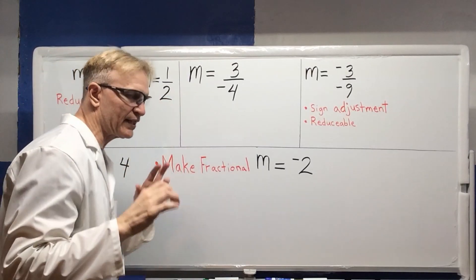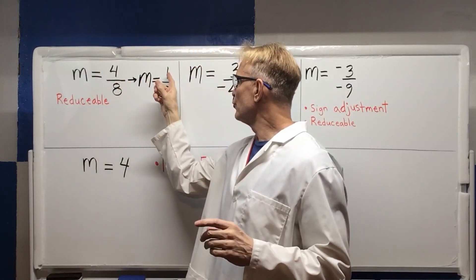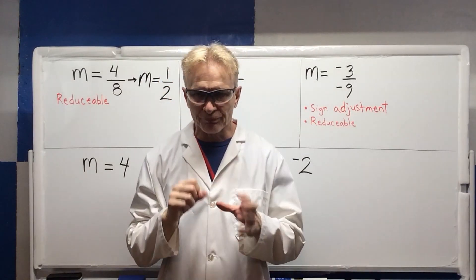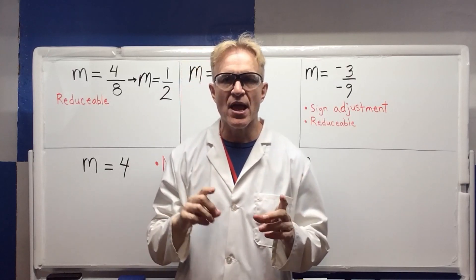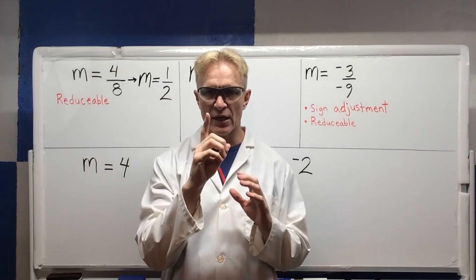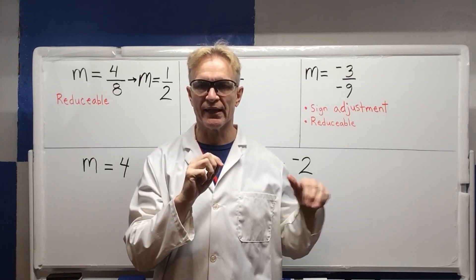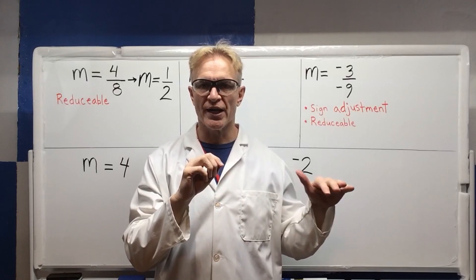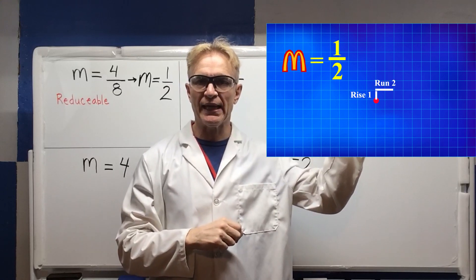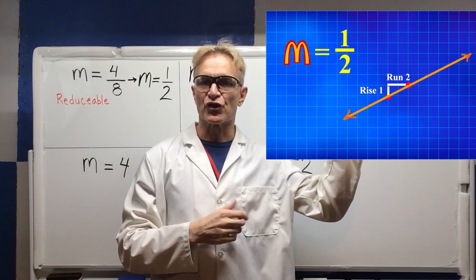Now I want to talk about what that means geometrically. The one on the numerator — the top number — is the rise, and the bottom number is the run. Rise over run means that since the number on top is one, we're going to rise vertically one unit, and then run two to the right horizontally. Rise one, run two. Here's our geometric representation — you can see the slope and how steep it is relative to other slopes.